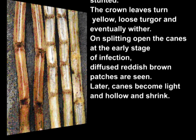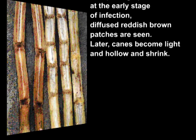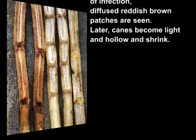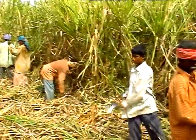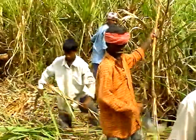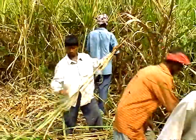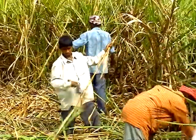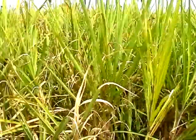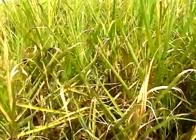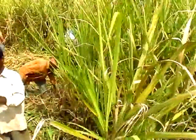Later, canes become light and hollow and shrink. The disease reduces germination in infected sets, causes drying up of shoots, and subsequently results in wilting of the stalks. In severe cases, total cane yield loss occurs due to wilt.